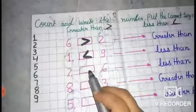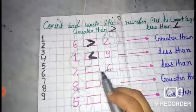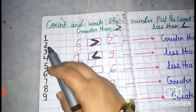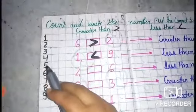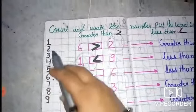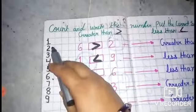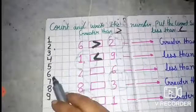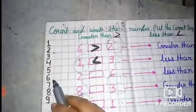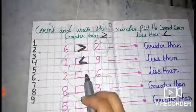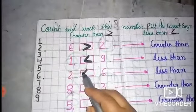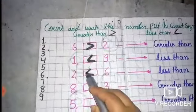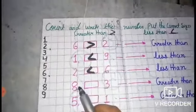Next, we have two numbers: two and six. Let's count: one, two, three, four, five, six. Two comes first, so two is the smaller number. Six is the bigger number, but the sign is less than — the symbol of less than. Six.